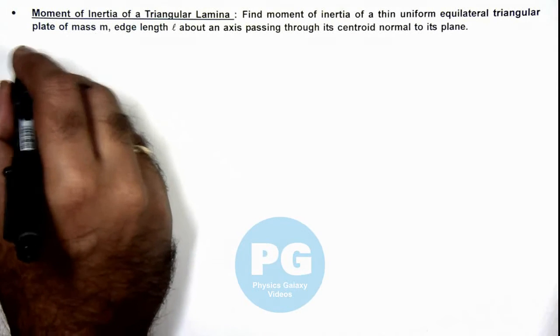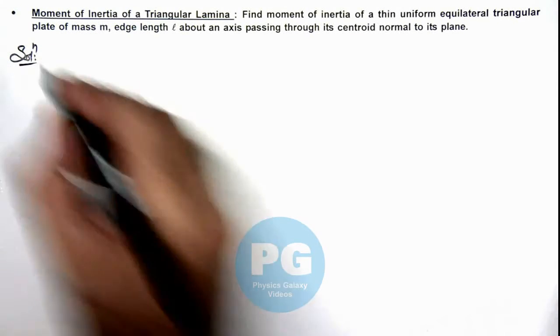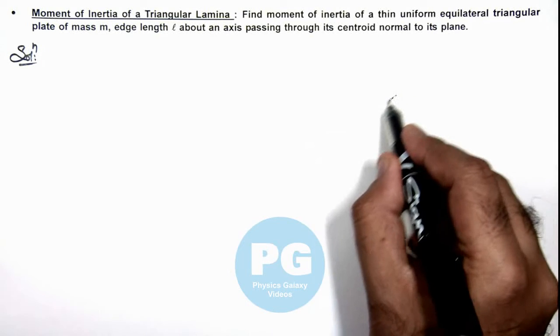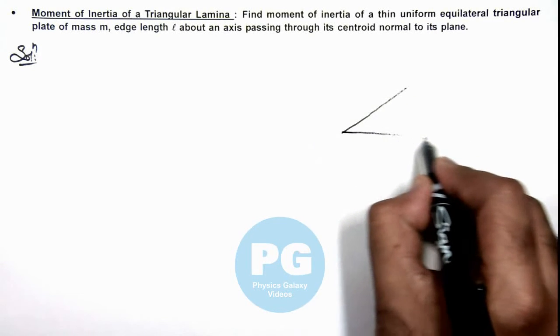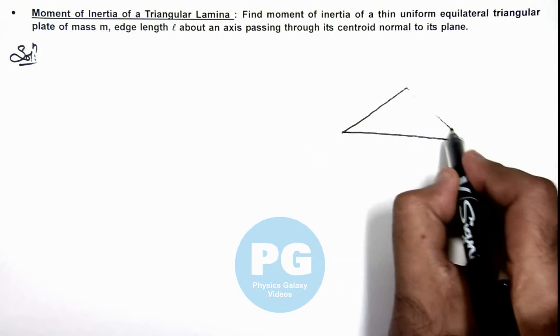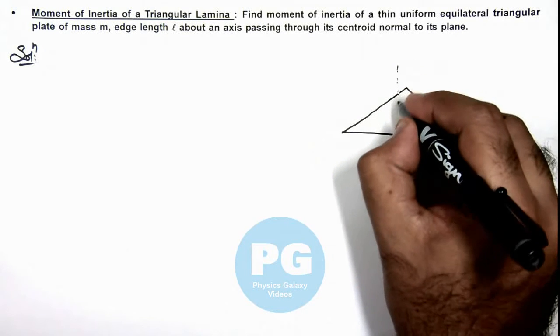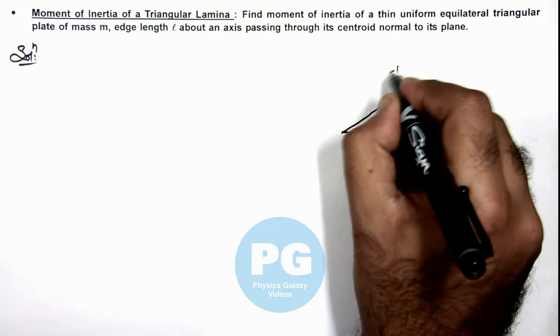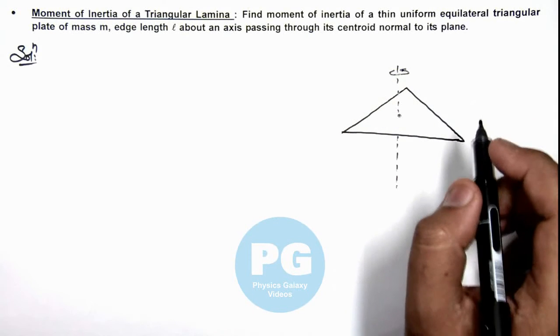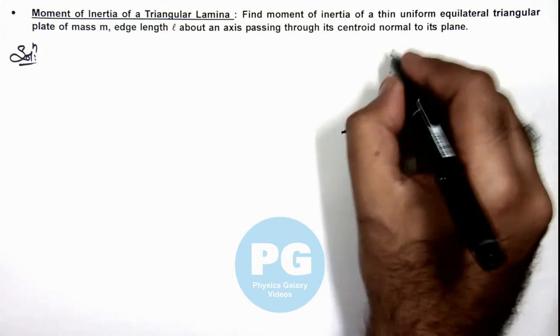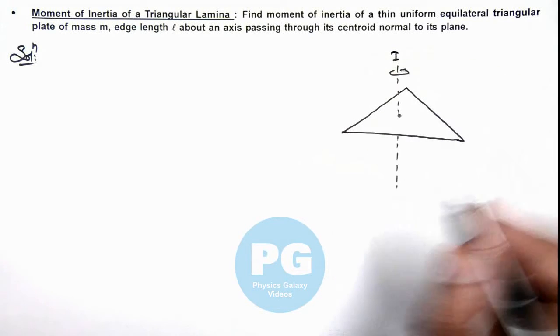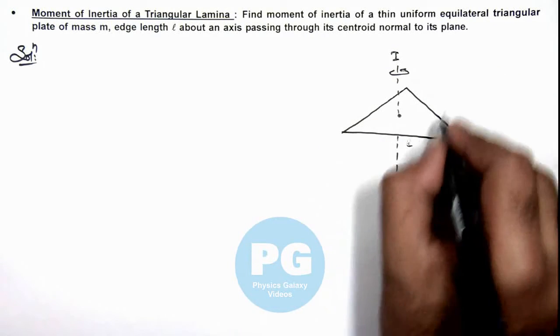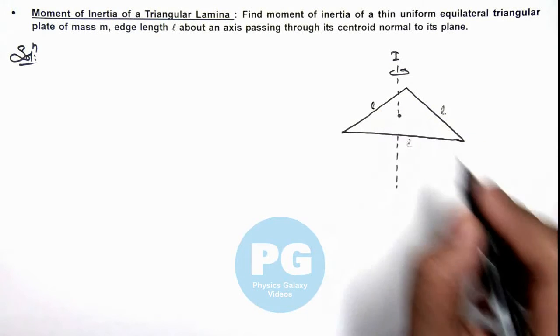Here, in solution if we draw the figure, the situation is like this: we are given an equilateral triangular lamina, and an axis of rotation is passing through its centroid. About this axis we are required to find its moment of inertia, say we consider it as I. The length of each edge is given as l, and its mass is m.